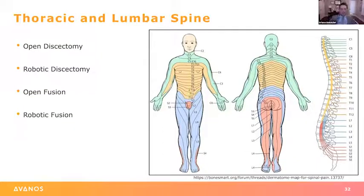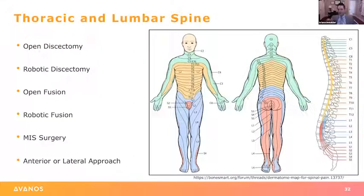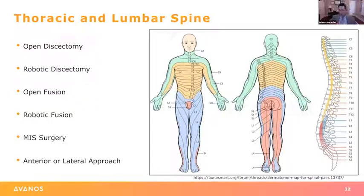We do these for our discectomies — both open and robotic — our open and robotic fusions, minimally invasive surgeries, anterior and lateral approaches to spinal fusions, and 360-degree procedures. We used to do TAP catheters for anterior and lateral approaches and got pretty good incisional pain coverage but really didn't cover the pain from the bone and disc. When we switched to ESP, because we get both the dorsal and ventral portions of the spinal nerves as well as probably some sympathetic and DRG coverage, we covered all of the pain much better.